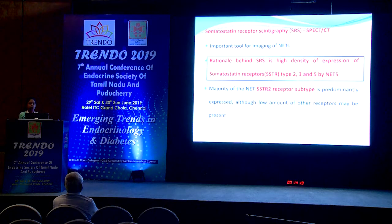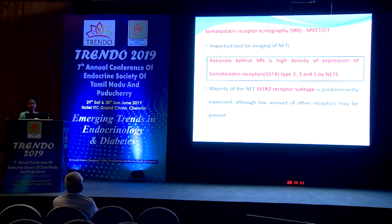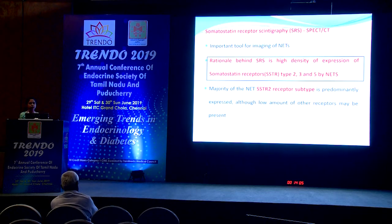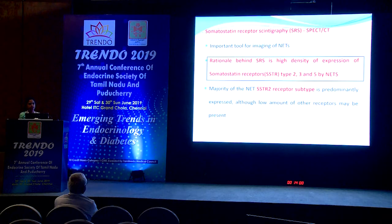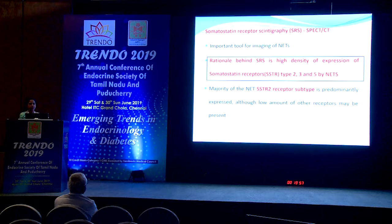Somatostatin receptor scintigraphy started with gamma camera SPECT-CT imaging. The rationale is the high density of expression of somatostatin receptors — mainly receptor types 2, 3, and 5 — by neuroendocrine tumors. The majority of NETs express somatostatin receptor type 2, though low amounts of other receptor types can also be present.